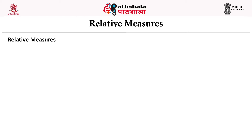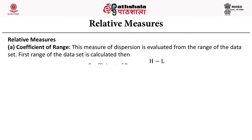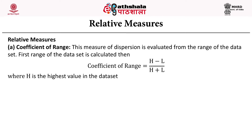The first relative measure is the coefficient of range. This measure of dispersion is evaluated from the range of the data set. First the range is calculated, and the formula for coefficient of range is (H minus L) divided by (H plus L), where H is the highest value in the data set and L is the lowest value in the data set.